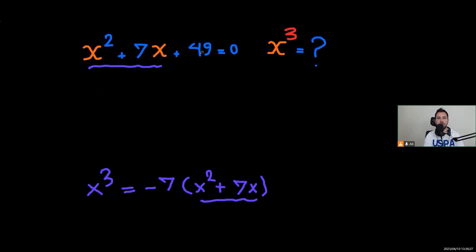I'm going to take 49 to the right hand side, so we're going to have x squared plus 7x equals negative 49.